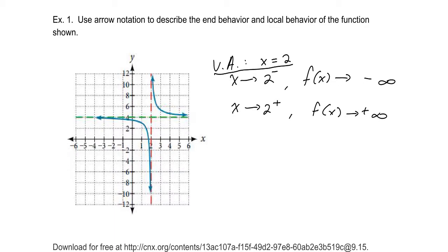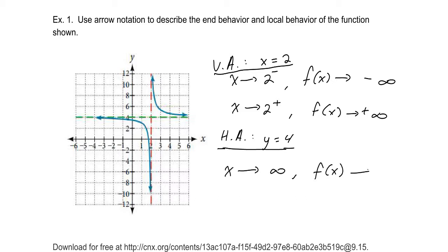For the end behavior — the horizontal asymptote — as the inputs increase, it looks like the outputs are approaching the value 4. As x goes to infinity, f of x approaches 4, coming from above. As x goes to negative infinity, those outputs are also approaching 4 but coming from below. So we write: as x approaches plus or minus infinity, f of x approaches 4. That is the arrow notation.